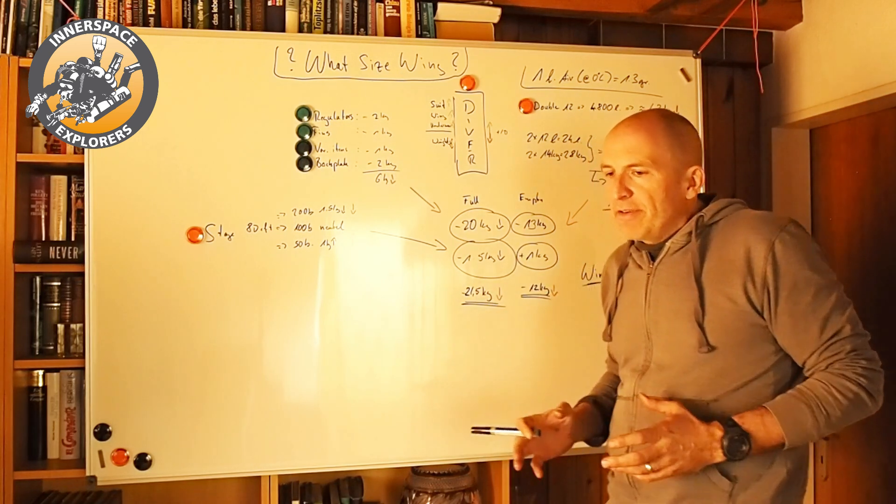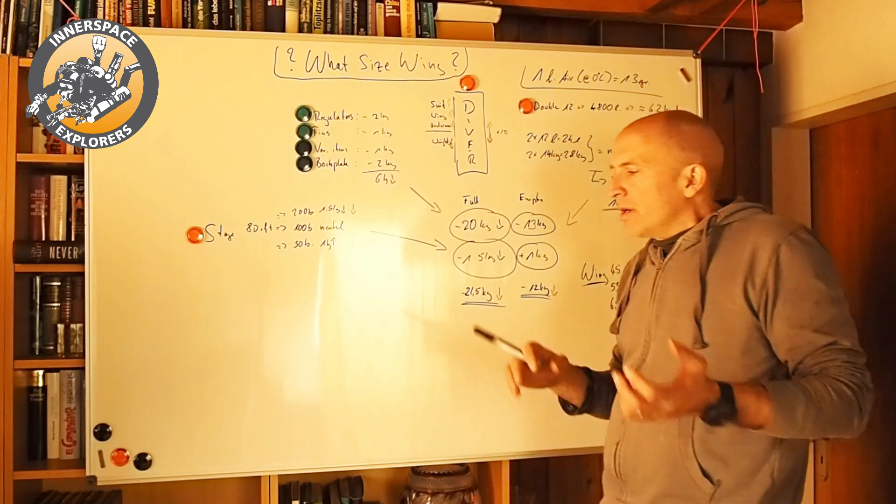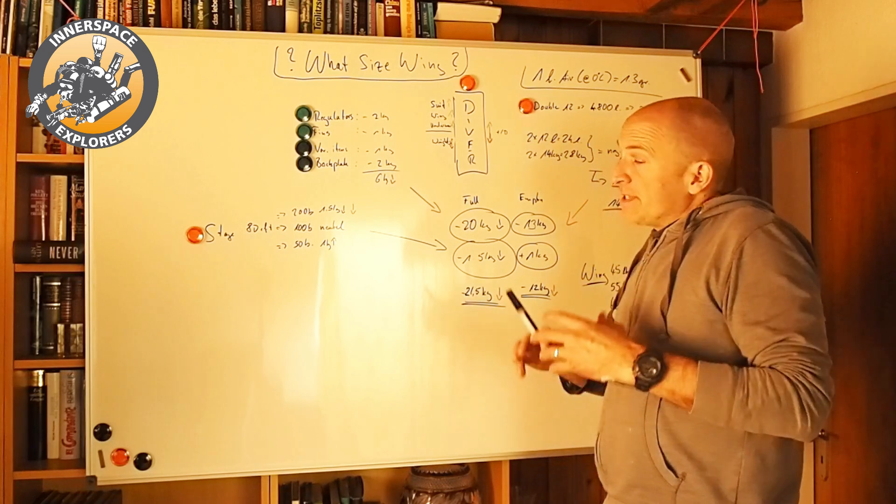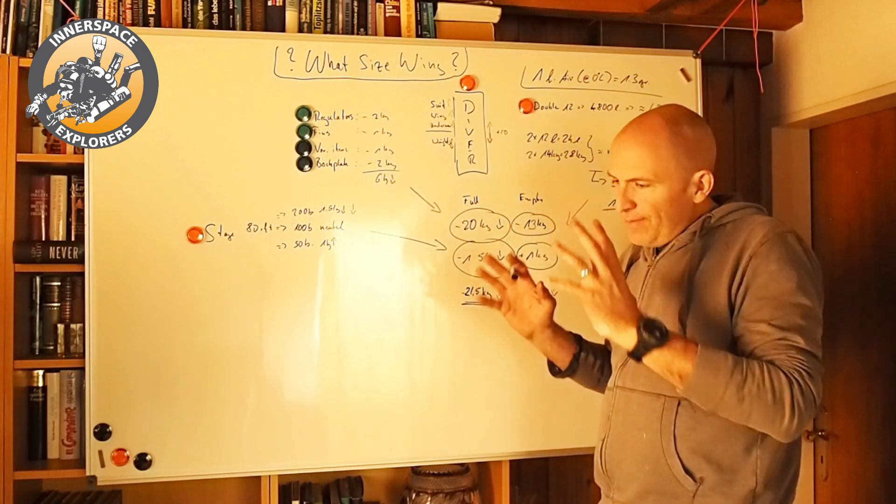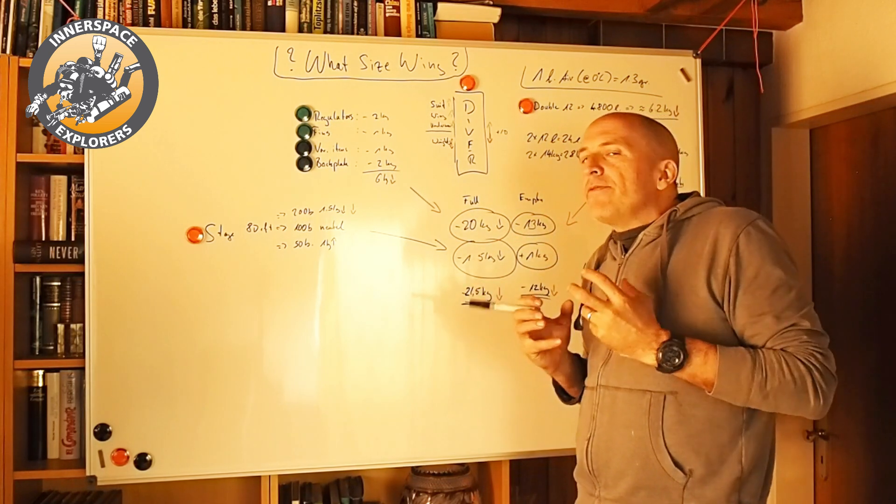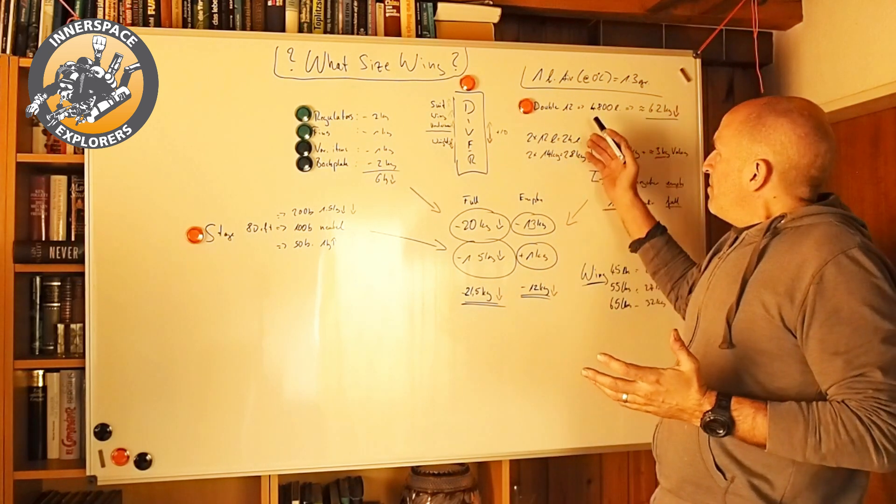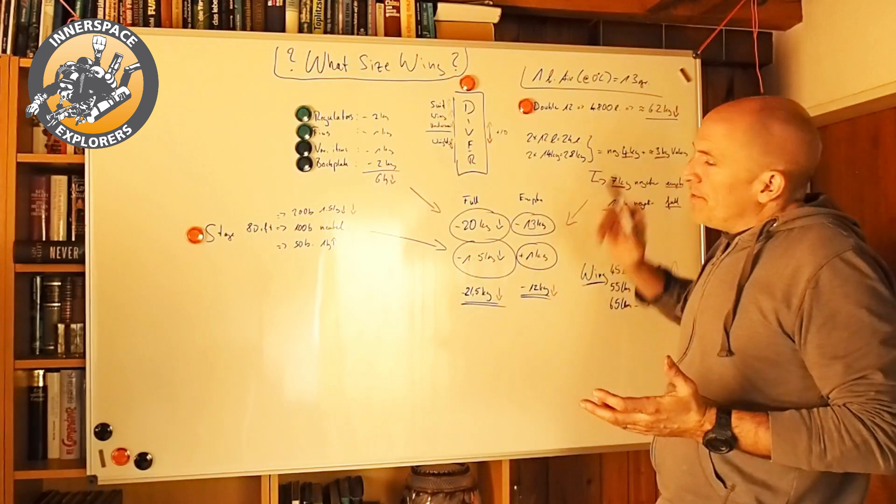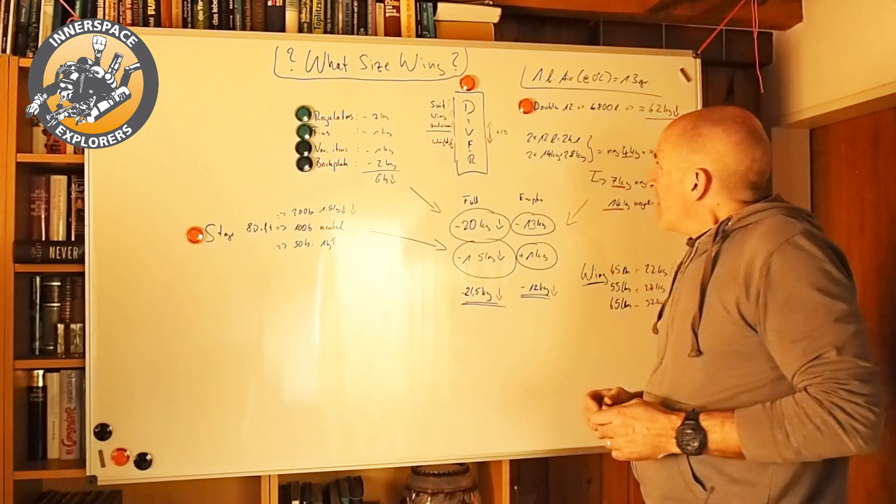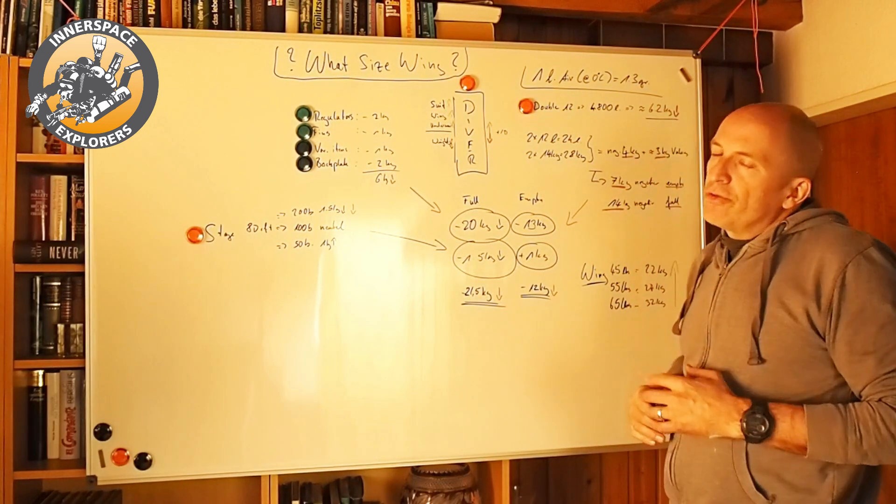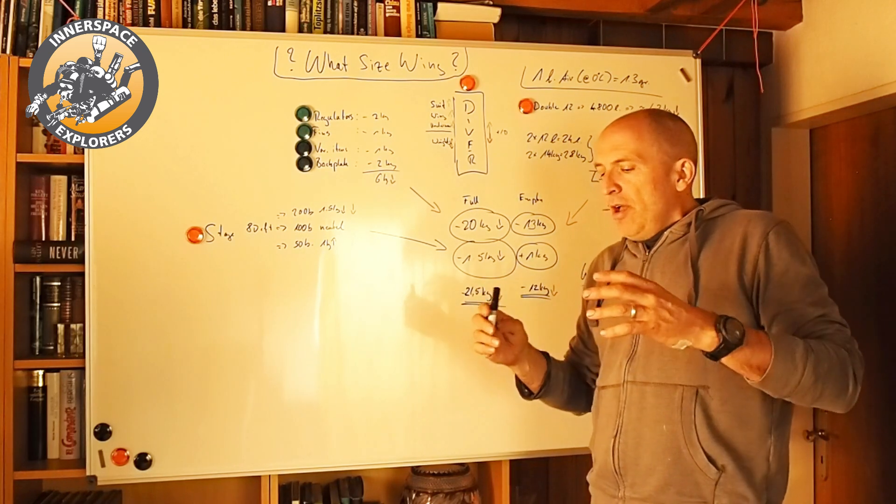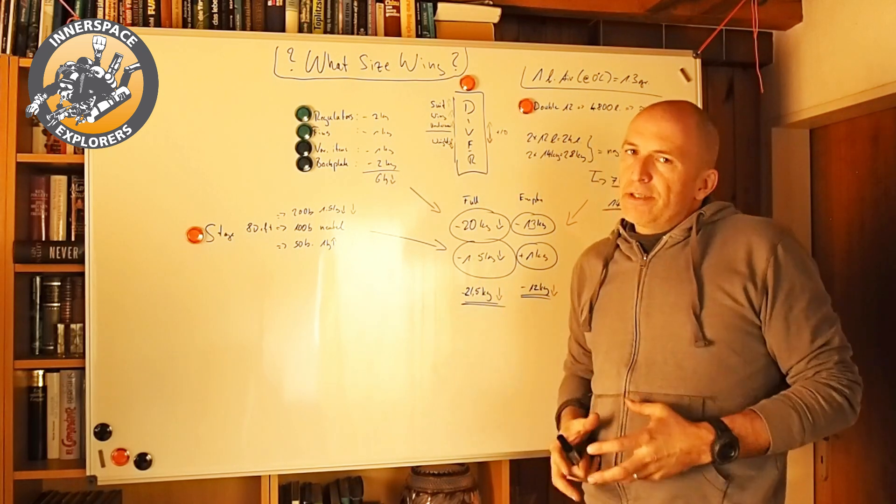Again, there's a lot of variables in that. If the gas is warmer, colder, whatever, if it's different gas, but it's rough numbers. I want to give you an idea. So that means if we have a double 12 at 200 bars, that gives 4,800 liters of air. And that means about 6.2 kilograms of weight from the air that we press into these tanks.